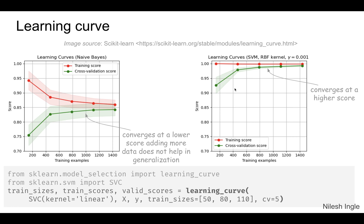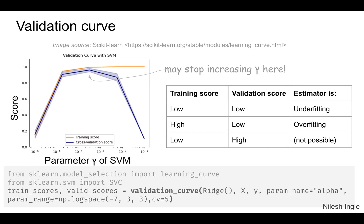That's how we can use validation curves and learning curves to visualize how the model is performing on the training set and the validation set during the training process. They can also be used to visualize how a hyperparameter can influence the score of a particular model.